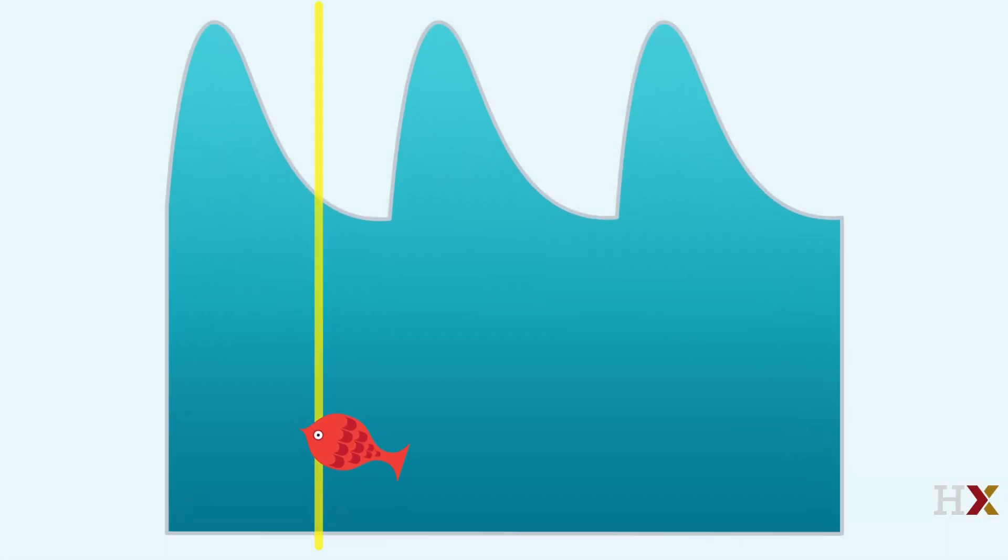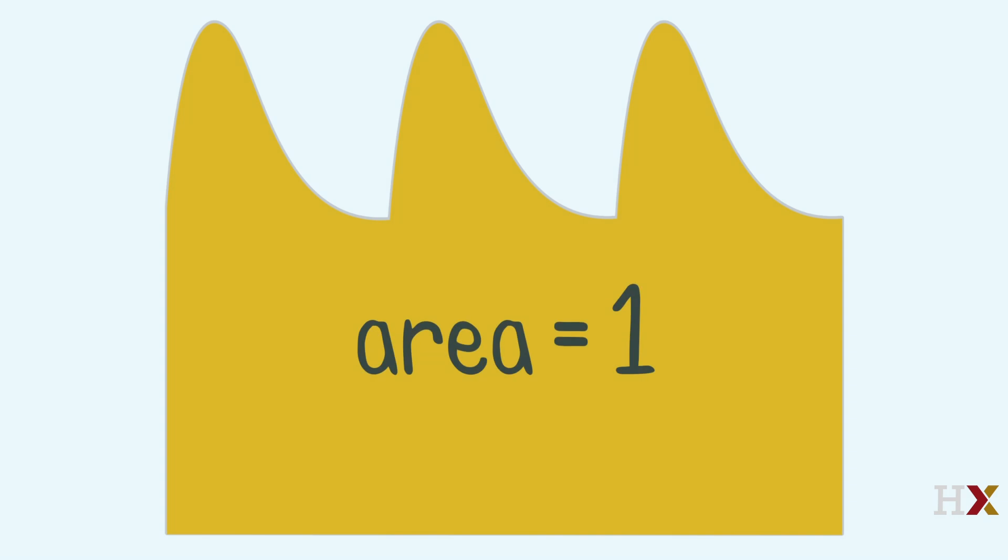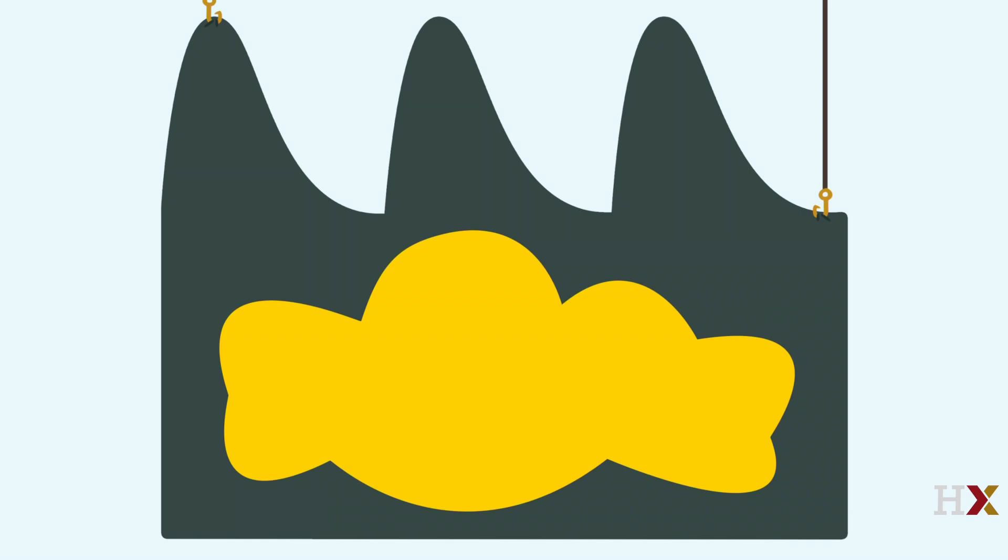Randi and her tank are two-dimensional. The area of the water is one. Each time Randi pauses, her position is uniformly random in the tank. This means the probability of her being in a particular region is the area of that region.